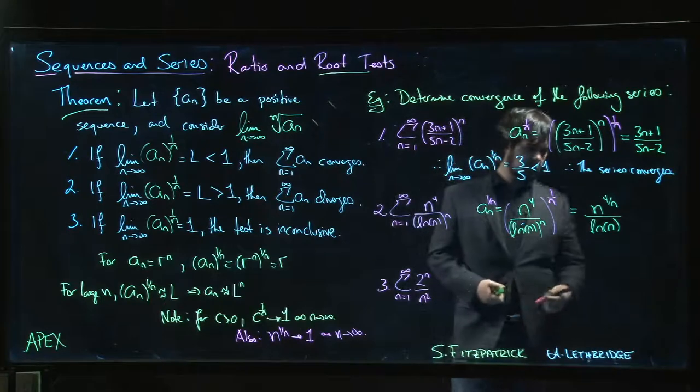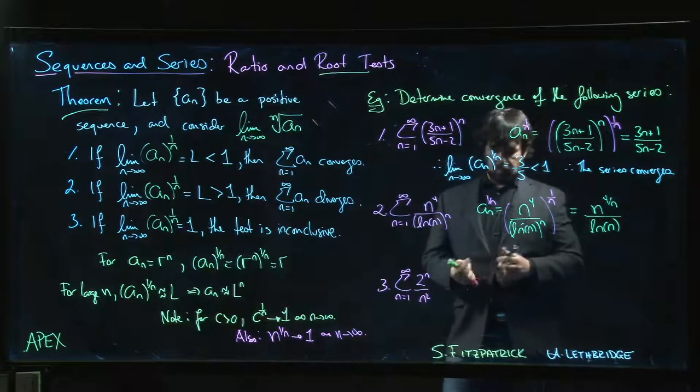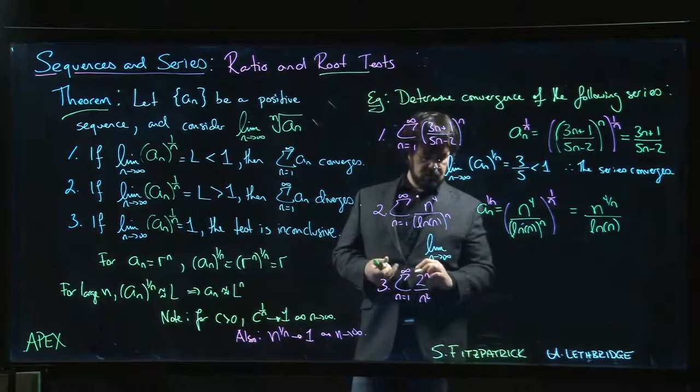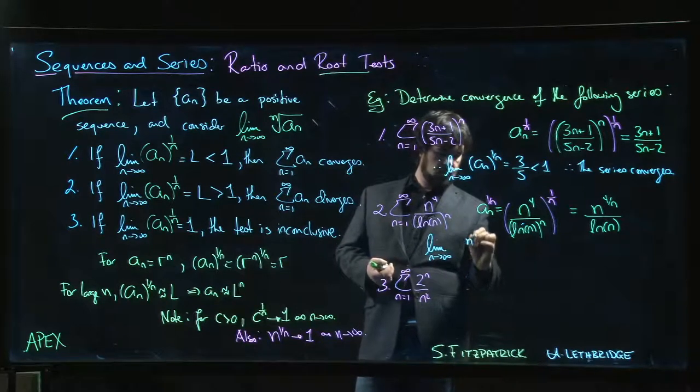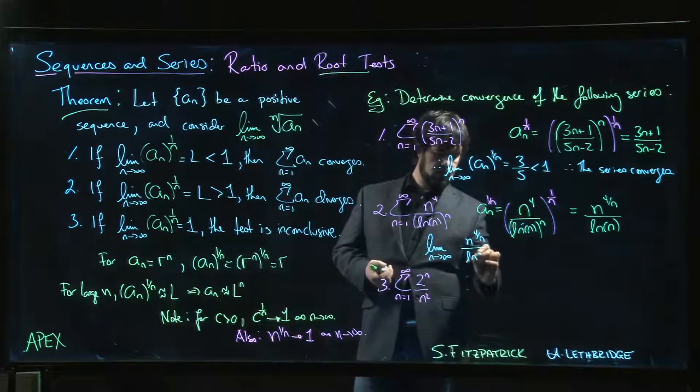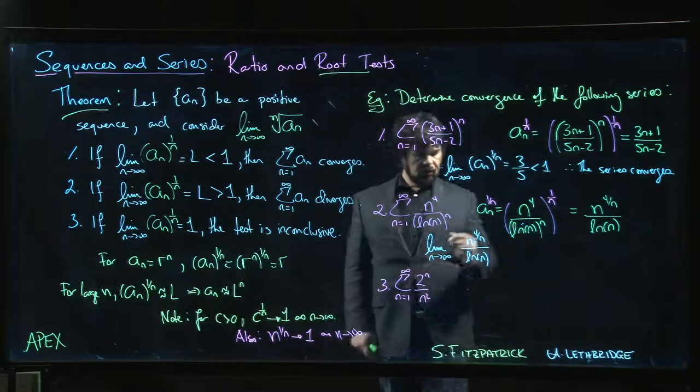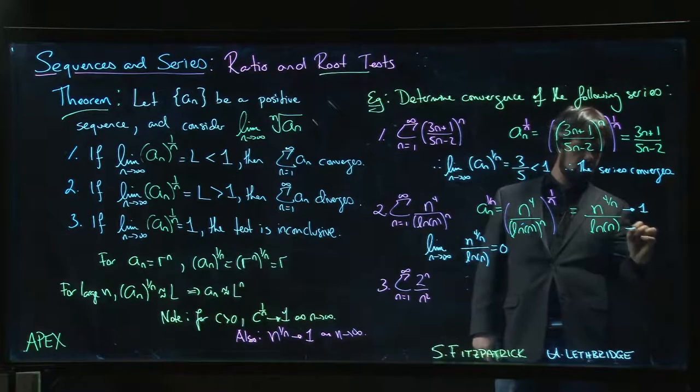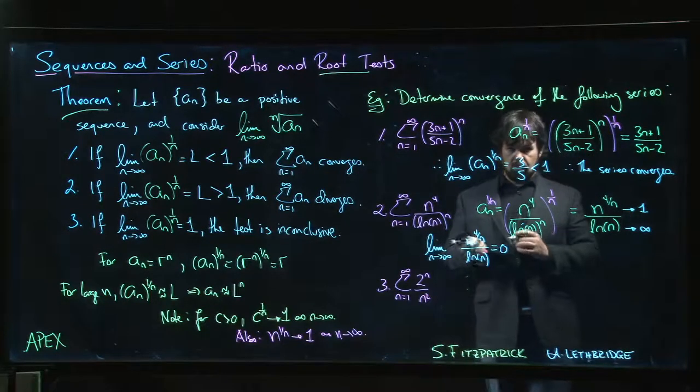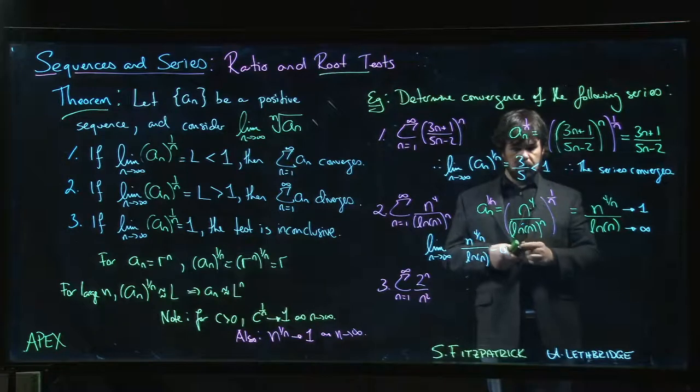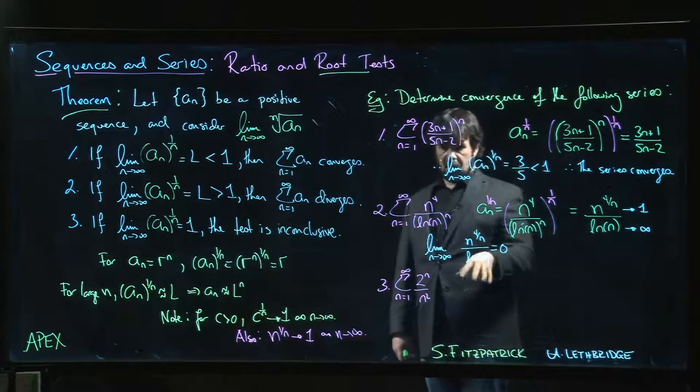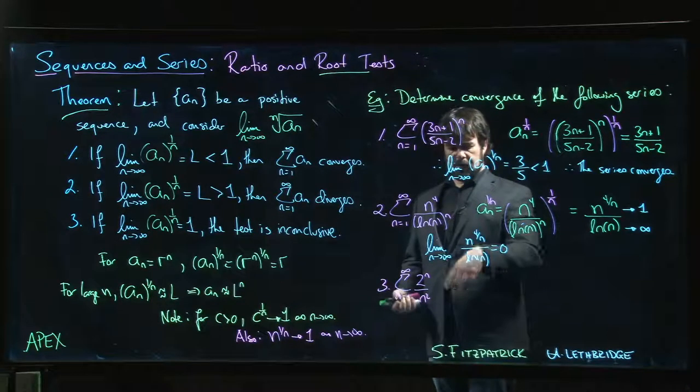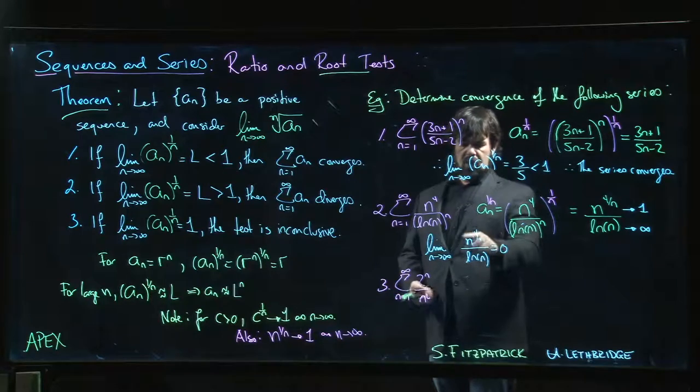Okay, so if you take the limit of this one as n goes to infinity, so we have n to the 4 over n divided by log n, well this limit is going to be 0. Okay, because the top is approaching 1, the bottom goes to infinity, 1 over infinity gives you 0. If you want to go into detail on this you can play around with indeterminate forms, L'Hôpital's rule. I mean the whole thing is not even indeterminate. 1 over infinity is not indeterminate, we get 0.